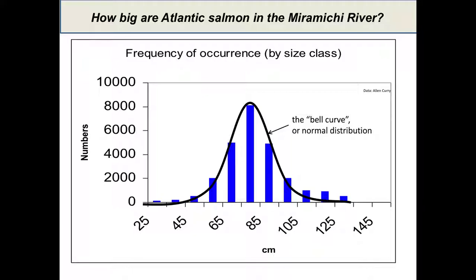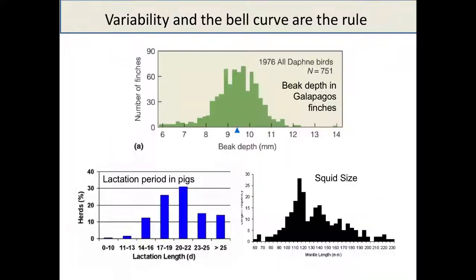This is very typical: whenever you go and measure a trait and you've sampled an entire population, you should in most cases get a distribution like that. We saw this when we looked at data from the finches — the beaks of 751 finches were measured and we got a normal distribution. Any trait — beak size, number of individuals, size — will have a range of variability because of genetic variation in the population. Here's a dataset for lactation period in pigs — completely different from beak size in finches — but it has a similar type of distribution.